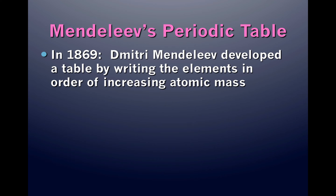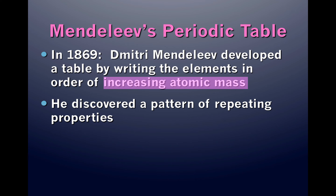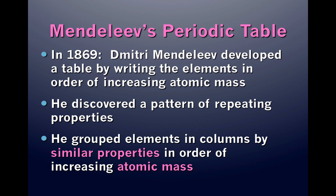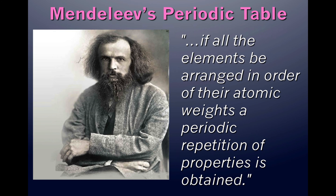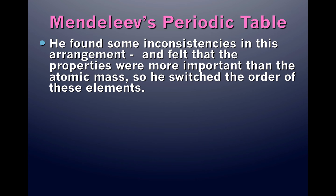In 1869, Dmitri Mendeleev developed a table by writing the elements in order of increasing atomic mass. He discovered a pattern of repeating properties and grouped the elements in columns by similar properties. Let's look at the following quote by Dmitri Mendeleev: 'If all the elements be arranged in order of their atomic weights, a periodic repetition of properties is obtained.'